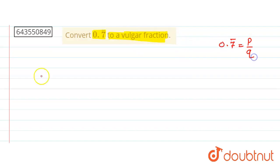First of all, just consider x is equal to 0.7 bar. Okay, so this 0.7 bar is nothing but 0.777 and so on, this is repeating. Call it as equation 1.